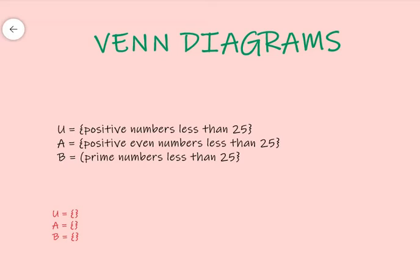Alright, so in this example, we're given the universal set and we're given set A and B. In the universal set, it says the universal set is a set of positive numbers less than 25. Set A represents positive even numbers less than 25, and set B represents prime numbers less than 25.